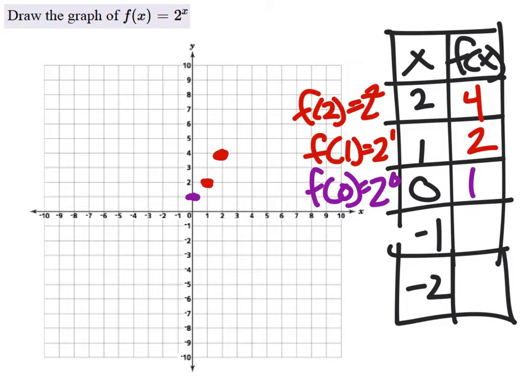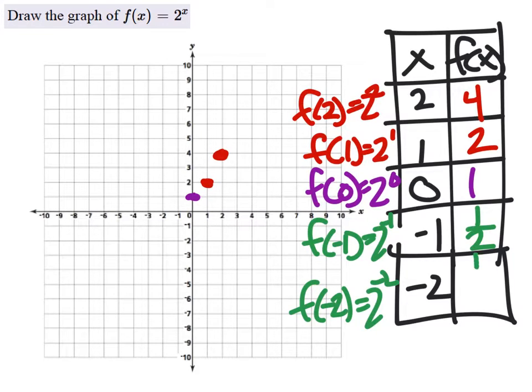And then f of negative 1 is 2 to the power of negative 1, which is one half or 0.5. And finally, f of negative 2 is 2 to the power of negative 2, which is one fourth.